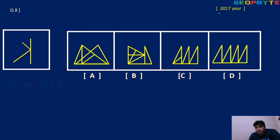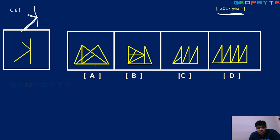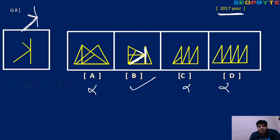Next — from the 2017 paper. The figure looks like a K but reversed. Option A — clearly not existing. In option B, check here: there is a line, and in the K shape there is a small line and a big line — this is almost possible. Option C — not existing. Option D — not existing. So option B is the answer.